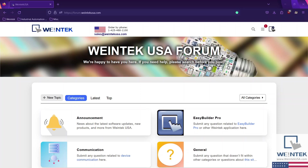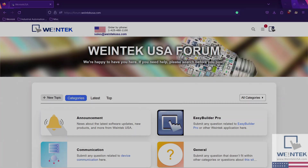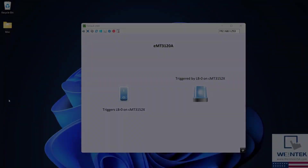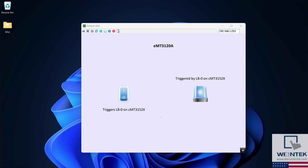In order for these HMIs to communicate with each other, they must be on the same subnet and have their own unique IP address. For today's demo, our HMIs are communicating with each other through an Ethernet switch. Watch along as I demonstrate how to configure network settings in our CMT and non-CMT series HMIs.